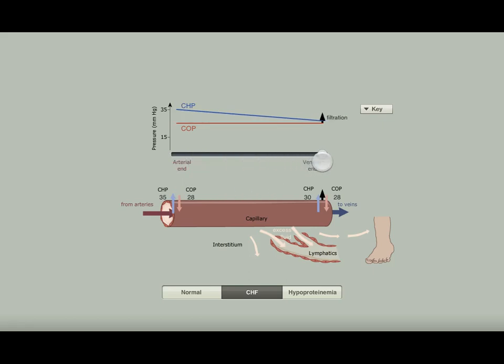The extra fluid filtered in CHF can overwhelm the ability of the lymphatics and fluid can accumulate in the interstitial tissues. This is seen as swelling called edema. You can see how the ankle swells and loses its normal contours when you go from normal to CHF.